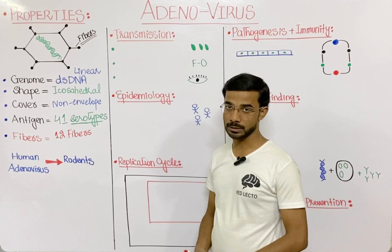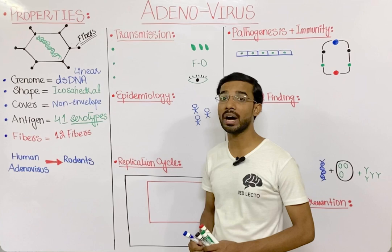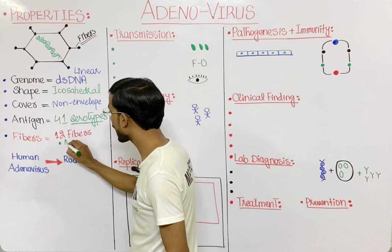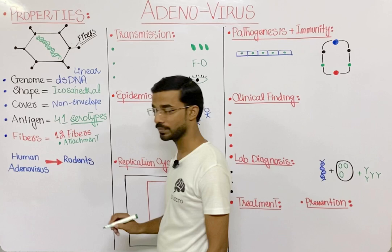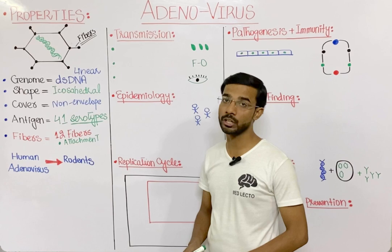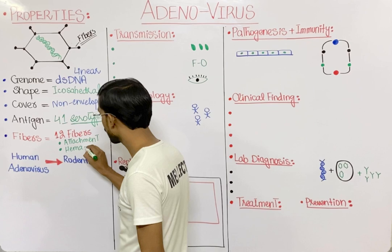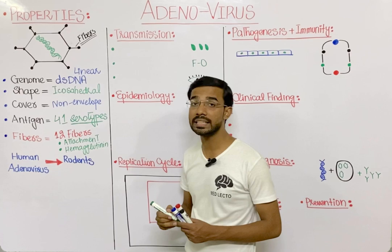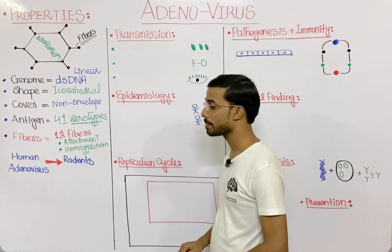These 12 fibers have two most important functions. First, the fibers help in the attachment of the virus to the host cell. Second, these fibers act as hemagglutinin in the case of adenovirus — they will agglutinate the RBCs.